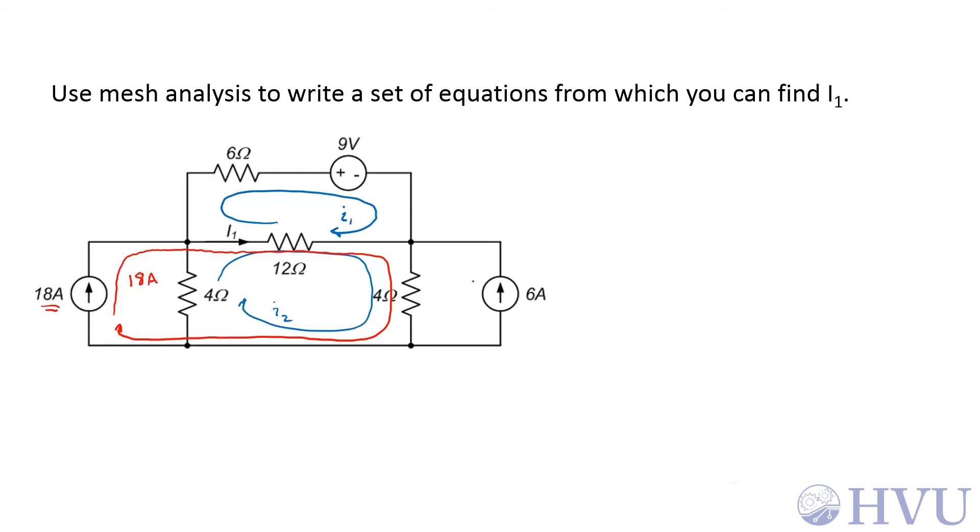For the 6-amp source, I think I'll start here, go up here, come around, come down through here, and then back here. Make that 6-amps. Kind of a weird and awkward choice, but it does match the magnitude and direction of that 6-amp source. Nothing else matters.